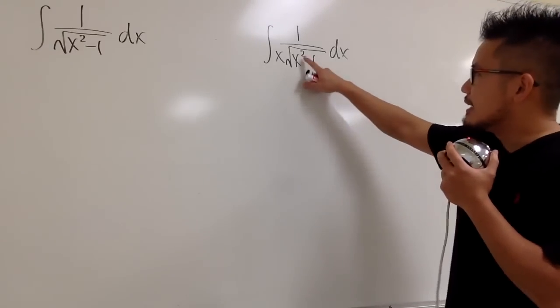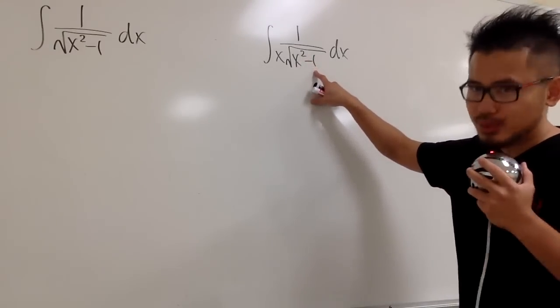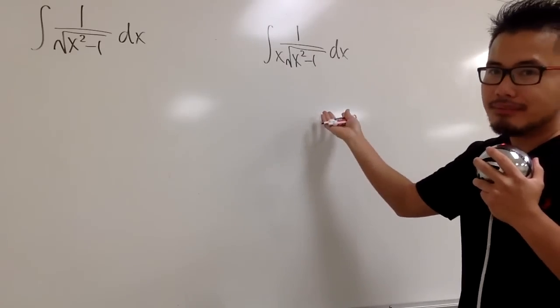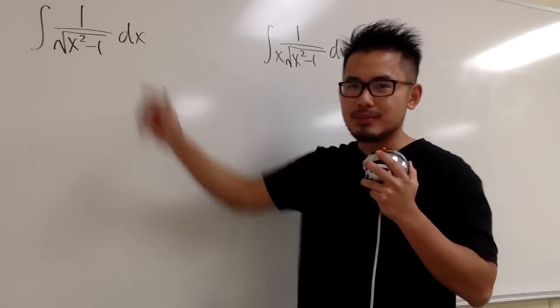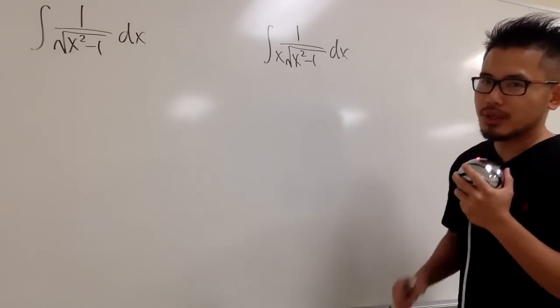As we can see, we have the x squared minus 1 in the square root. That's what makes this pretty hard. Even though you can actually do this with u substitution, that's not doable with this. U sub doesn't help. Therefore, let's think about what we can do.